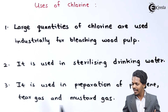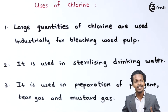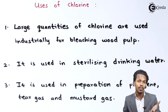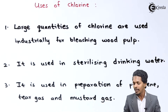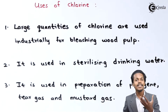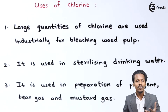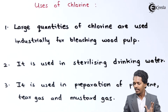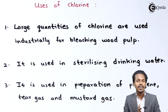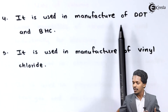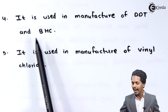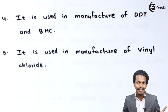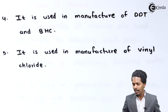Chlorine is also used in the preparation of phosgene, tear gas, and mustard gas, which are very poisonous and hazardous gases used in warfare. Additionally, it is used in the manufacturing of DDT and BHC, which are very effective insecticides.